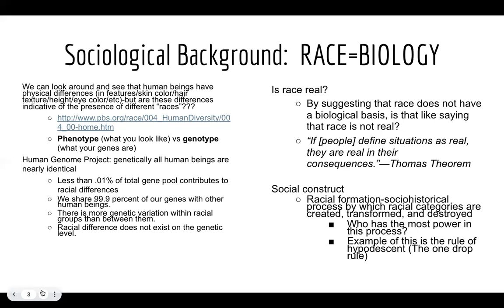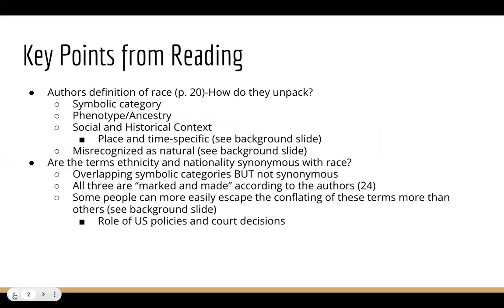This is what makes the whole definition of race so complicated. If we just say it's categories based on phenotype or ancestry, that sounds much more straightforward than it is. That is the point the book is making when it emphasizes the role that society and history has played in creating these concepts.